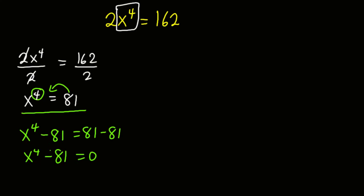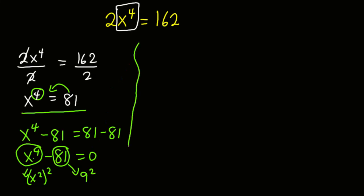Now if you take a look at 81, you realize we can break 81 down to get 9 squared, because 81 is a perfect square. Also, x exponent 4 is a perfect square because we can get x squared out of it. When we square x squared we get x exponent 4, and when we square 9 we get 81. So I can write x exponent 4 minus 81 as x squared all squared minus 9 squared, which is equal to 0.